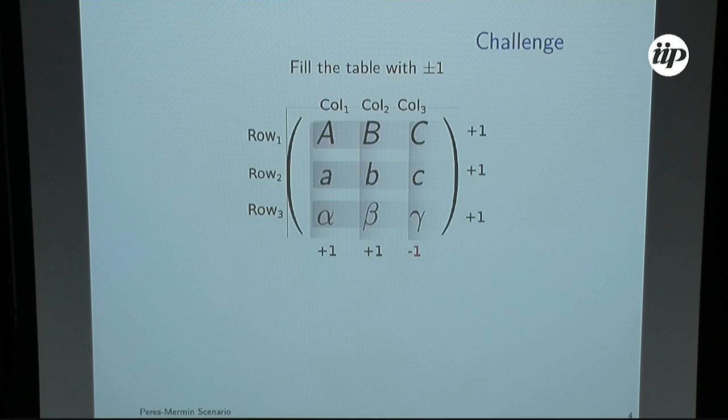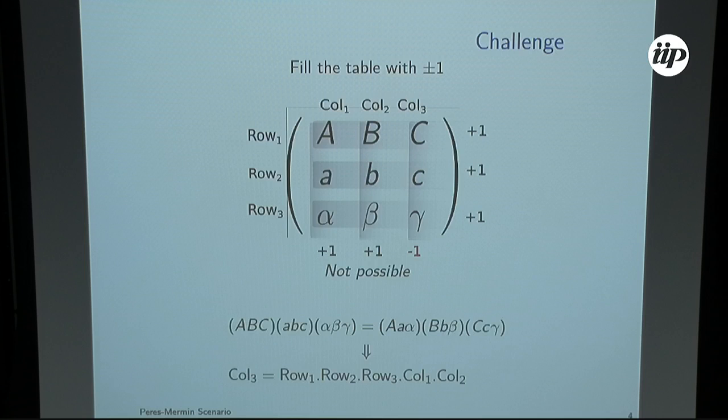So if you try to fill this square, you see that it's not possible, mainly because the product of the rows is the same as when you take them in columns. So the last column will be a product of the last one. If you have plus one, you always have the last column with plus one.